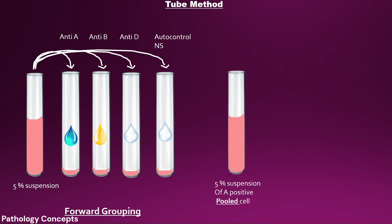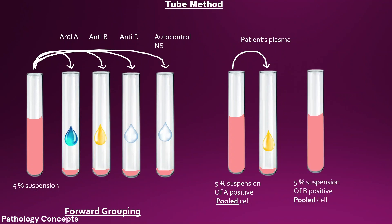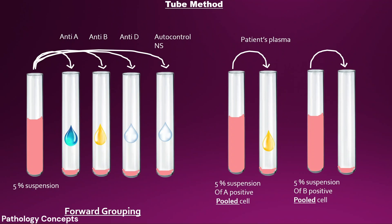For reverse grouping, prepare a 5% suspension of pooled A and pooled B cells from randomly selected three A and three B positive blood group samples. Add one drop of 5% pooled A-positive cell suspension into tube five and add one drop of the patient's plasma. Add one drop of 5% pooled B-positive cell suspension into tube six and add one drop of the patient's plasma. This is called reverse grouping.